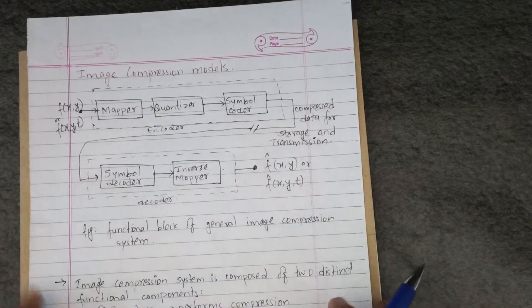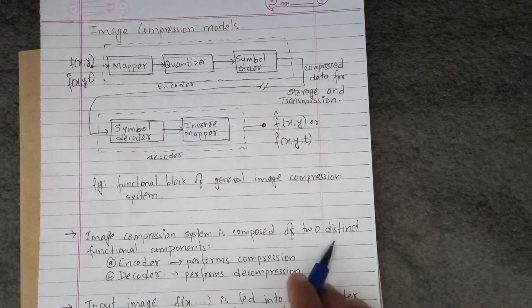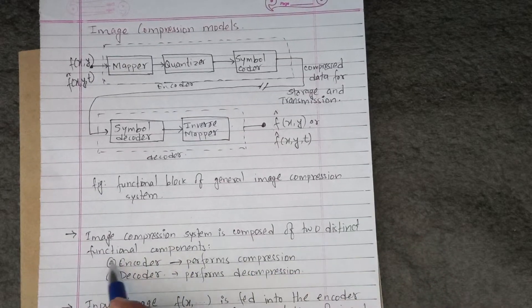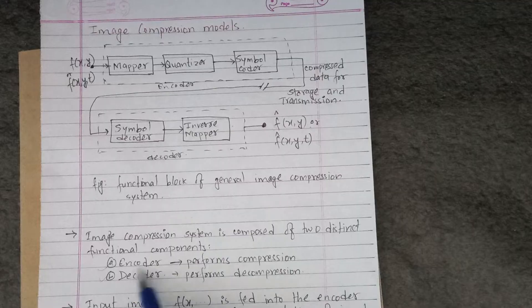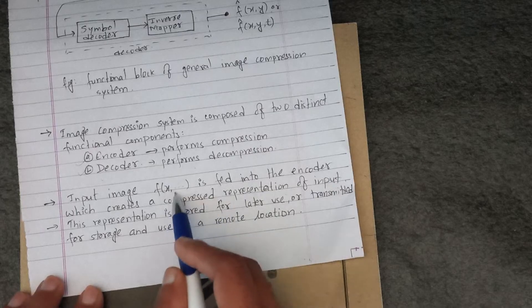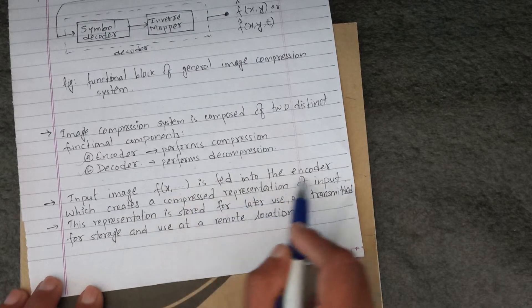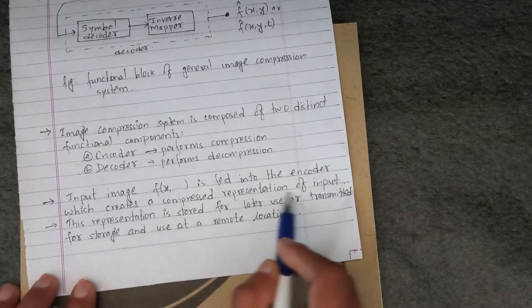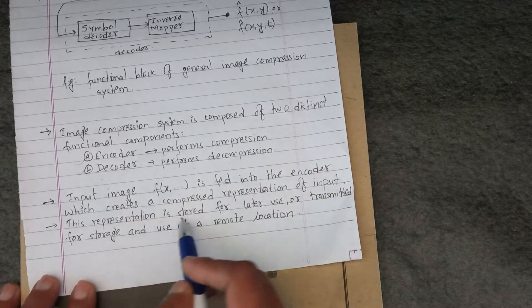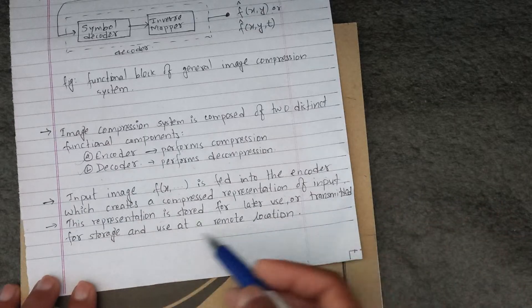Let's see the theory part. An image compression system is composed of two distinct functional components: encoder and decoder. The encoder performs compression and the decoder performs decompression. The input image in the spatial domain is fed into the encoder, which creates a compressed representation of the input.